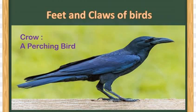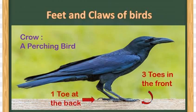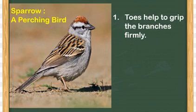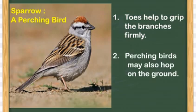Crow is an example of a perching bird. It has 3 toes in the front and 1 toe at the back. Another example is a sparrow. These birds have toes that help them grip branches firmly, even when they are asleep. Perching birds may also hop on the ground — they can fly, but they can also hop.